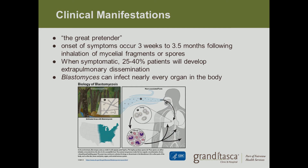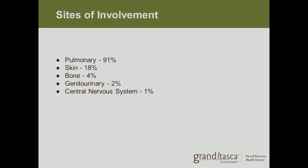Blastomycosis is known as the 'great pretender' because it can infect any organ in the body and present in many different ways. The onset of symptoms occurs three weeks to three and a half months following inhalation of mycelial fragments or spores. When symptomatic, 25 to 40 percent of patients develop extra-pulmonary dissemination — meaning spread outside of the lungs. The most common sites of involvement are: pulmonary 91%, skin 18%, bone 4%, genitourinary 2%, and brain 1%.